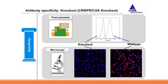The knockout cell line is compared to the wild-type cell line by staining with the tested antibody and analyzing by flow cytometry as well as fluorescence microscopy. For flow cytometry, a histogram compares the knockout signal in blue with the wild-type signal in red. The same cells are analyzed by fluorescent microscope. The antibody is confirmed specific if no binding to the knockout cells is detected — the red signal appears only in wild-type cells.